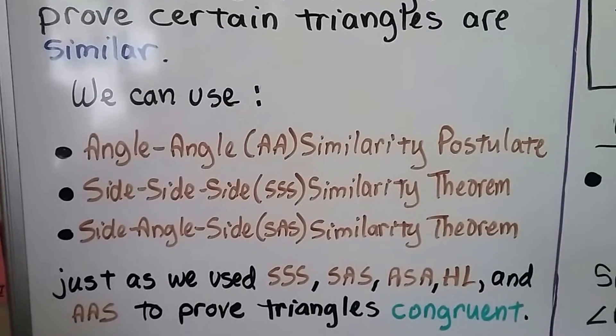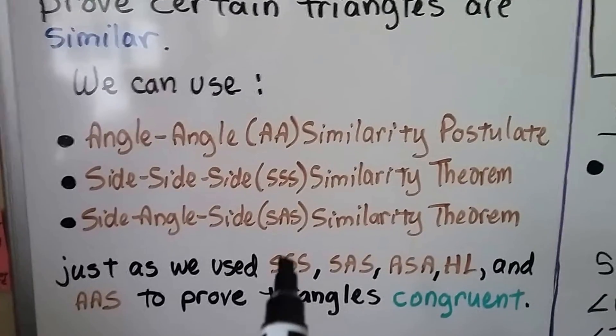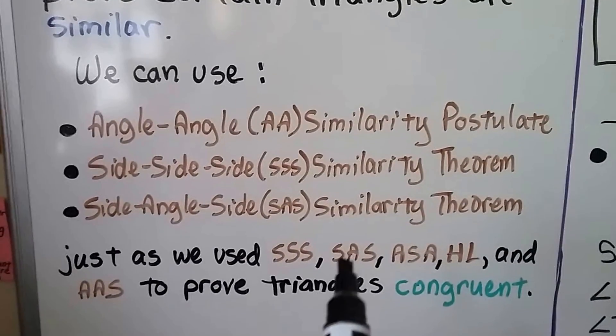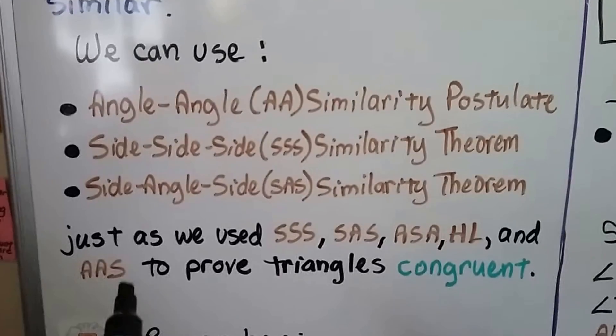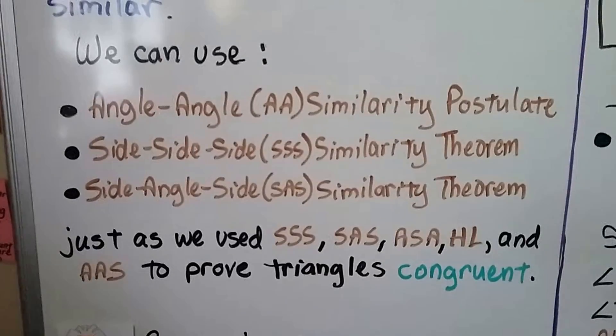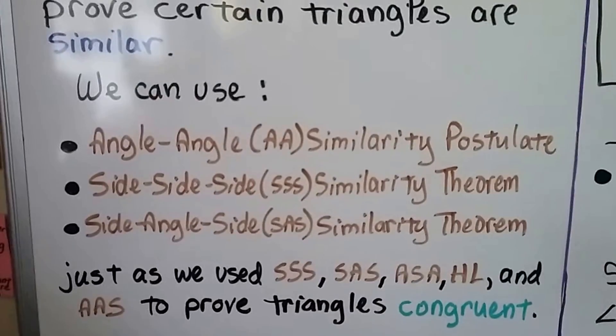SAS similarity theorem. Just as we used side-side-side, side-angle-side, angle-side-angle, hypotenuse leg, and angle-angle-side to prove triangles congruent, we can use these to prove triangles are similar.